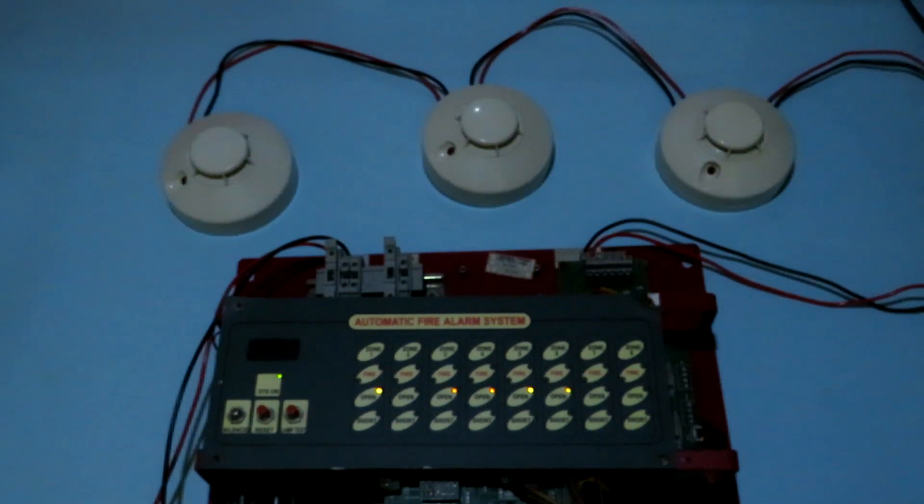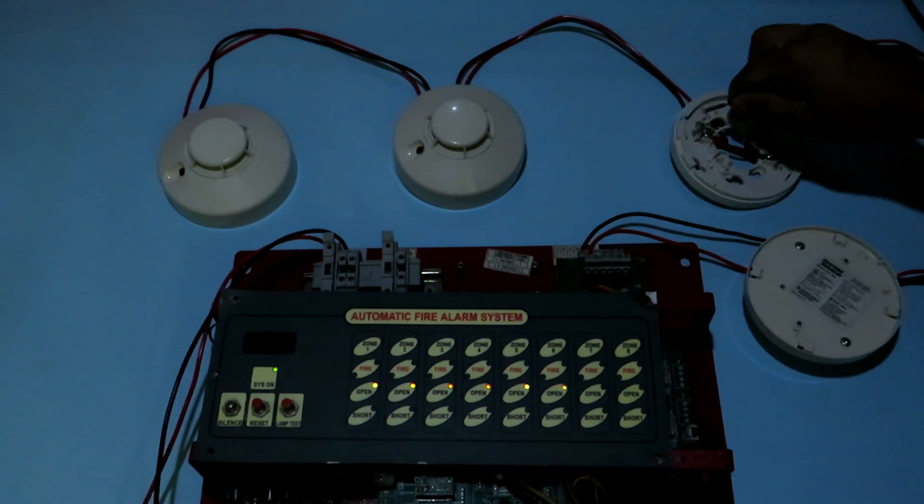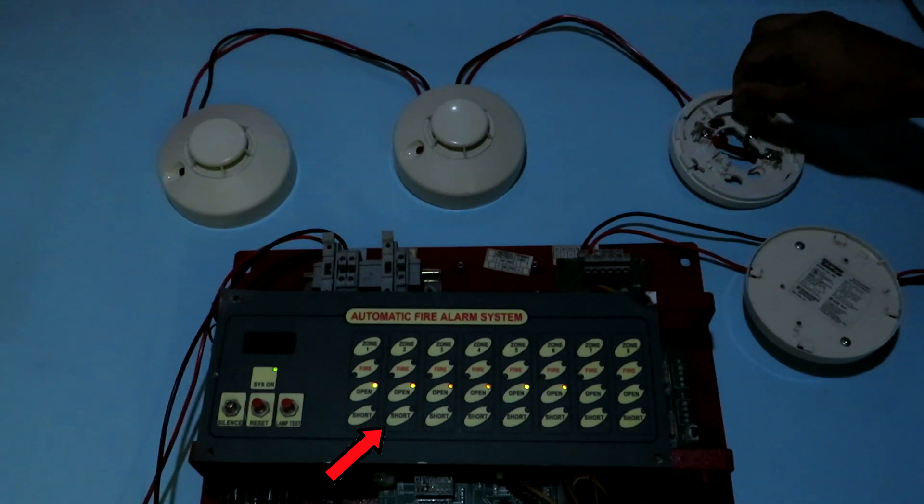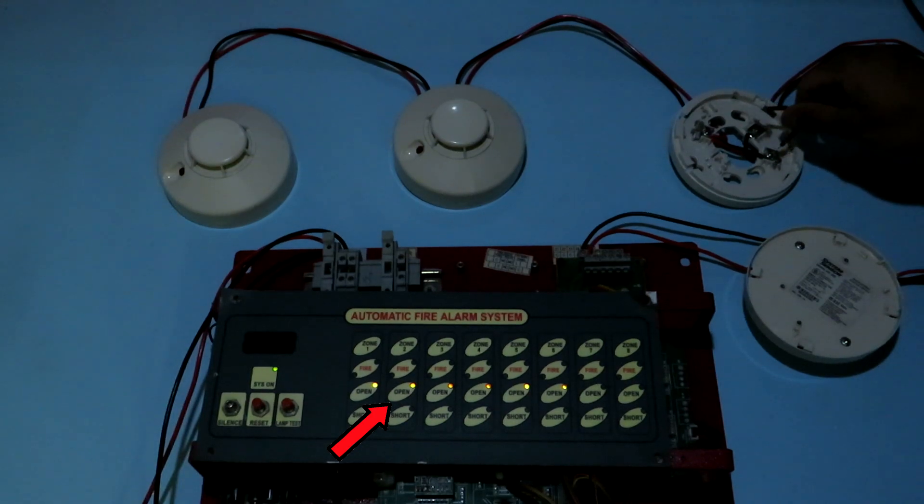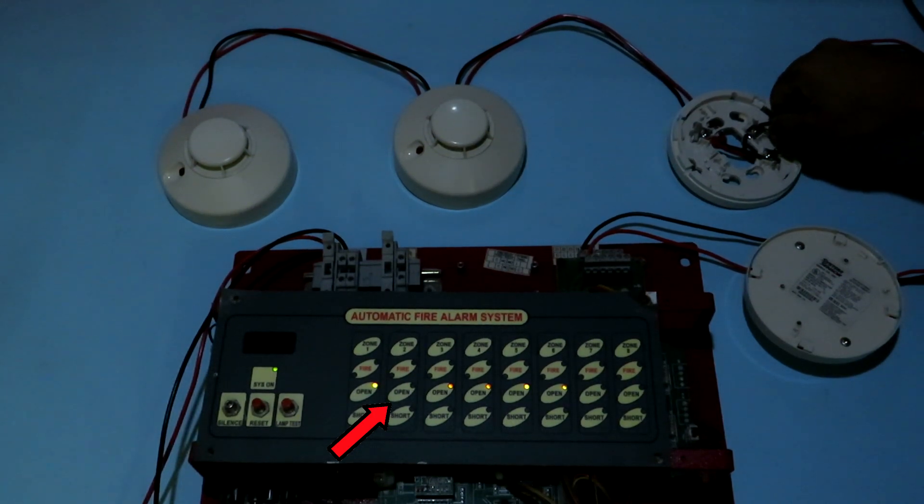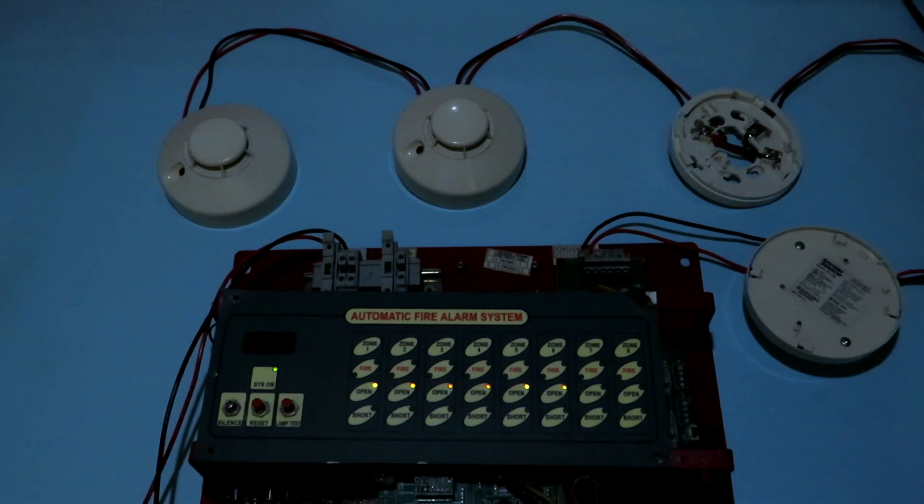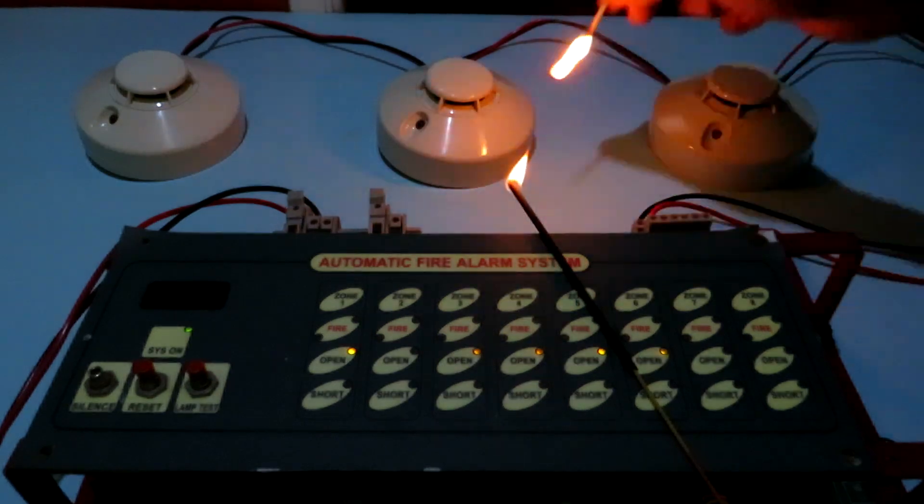Now if I attempt to create a dead short condition between the positive and negative terminal the short circuit LED for zone two will switch on therefore indicating that the line has been shorted somewhere. Here if I short the negative in and out terminals you can see that the open circuit indication for zone two goes off because that's what the smoke detector unit essentially does. As I explained to you earlier that the negative in and negative out terminals inside the smoke detector unit are shorted.